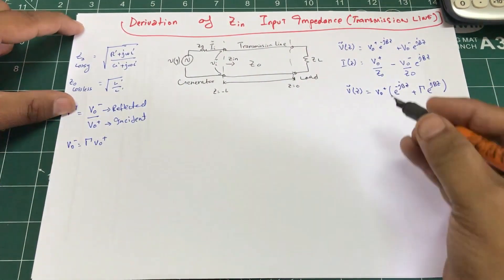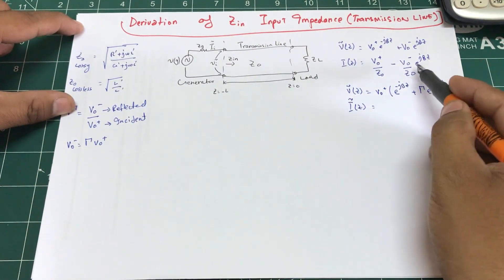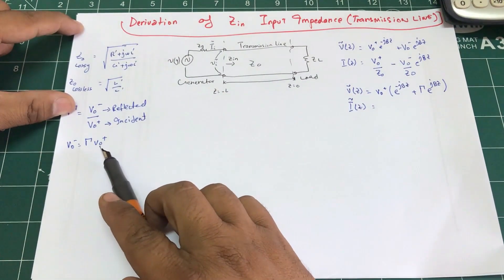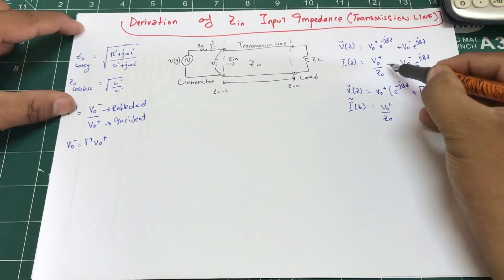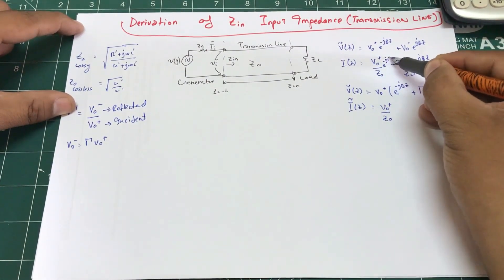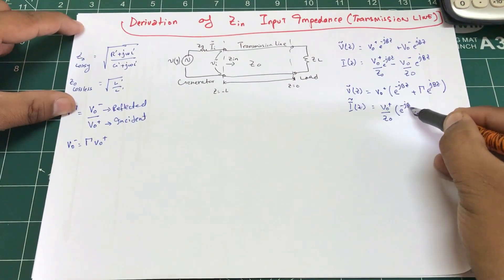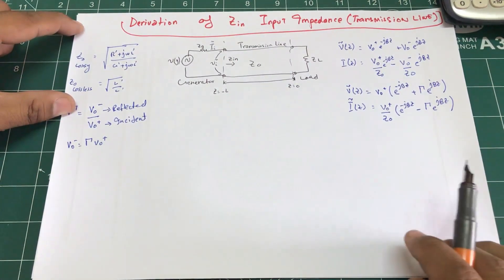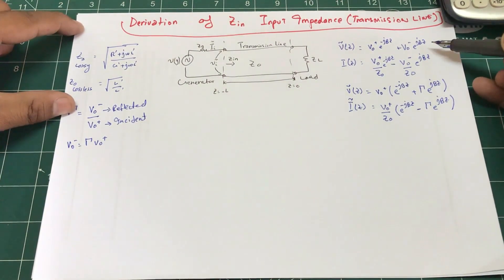For the current equation I(z), I make the same replacement: substituting V₀⁻ = Γ·V₀⁺ and factoring out V₀⁺/Z₀, giving I(z) = (V₀⁺/Z₀)[e^(−jβz) − Γ e^(jβz)].